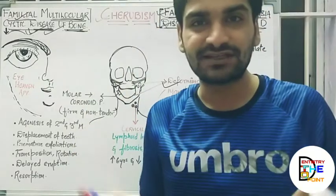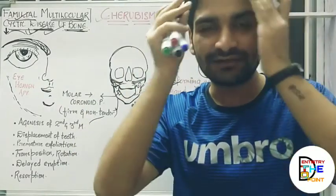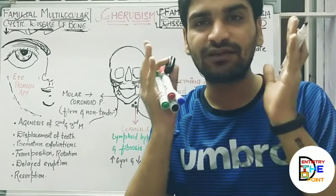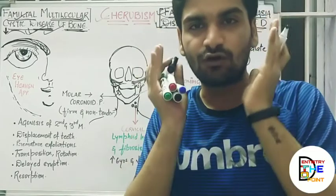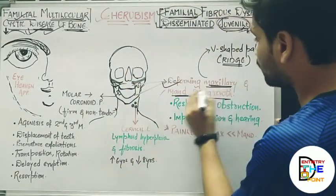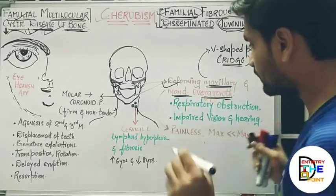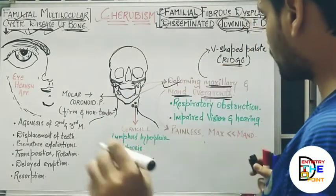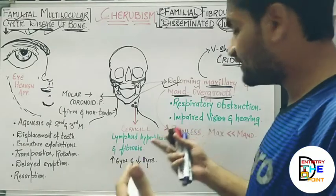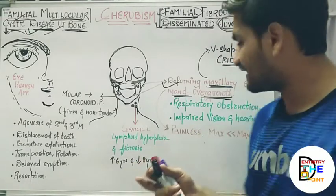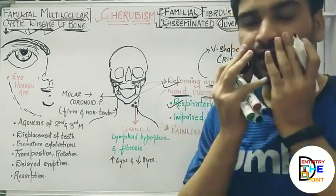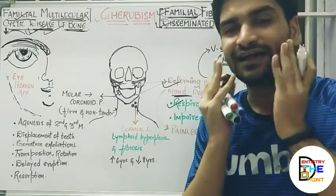The face will give a cherubic look — meaning a full, rounded face appearance. Due to this overgrowth, certain conditions can arise, such as respiratory obstruction due to overgrowth of the maxilla.